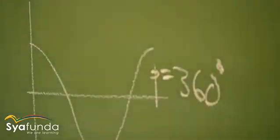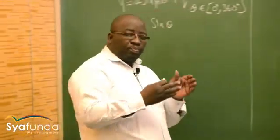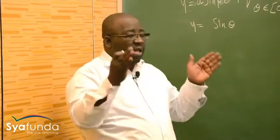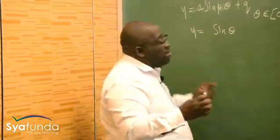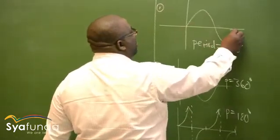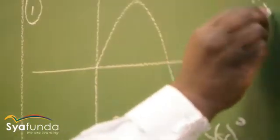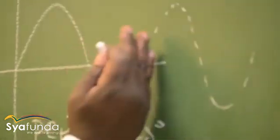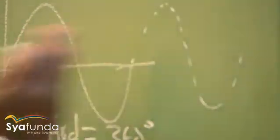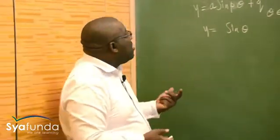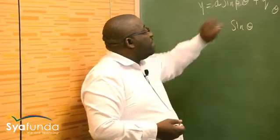A period is when you sketch your graph from the beginning up to the end — it's how you complete one full cycle of that graph. From the start to where the graph finishes one cycle, that is the period. If you start another cycle, that is another period. The period will change depending on the value of P.